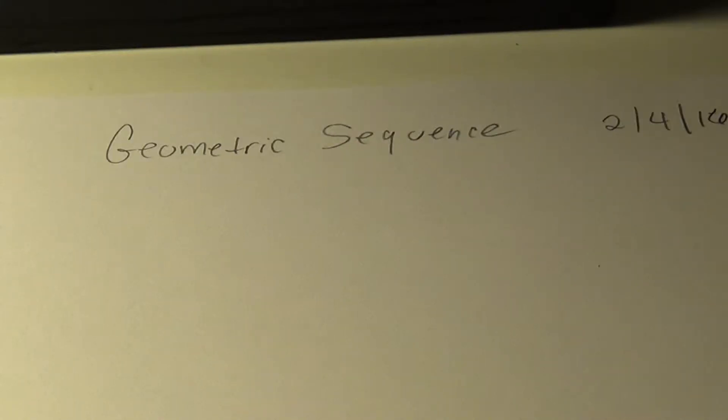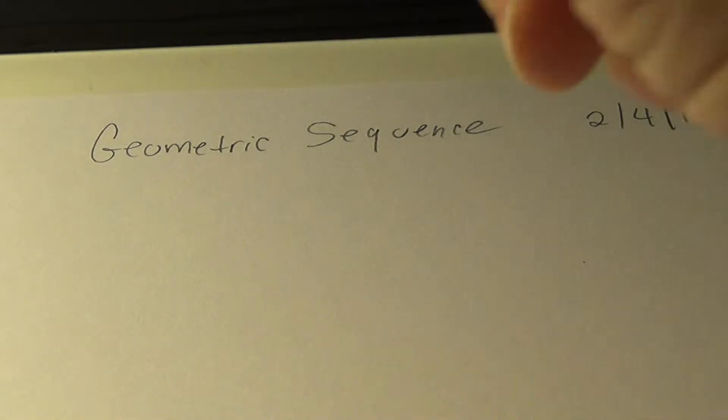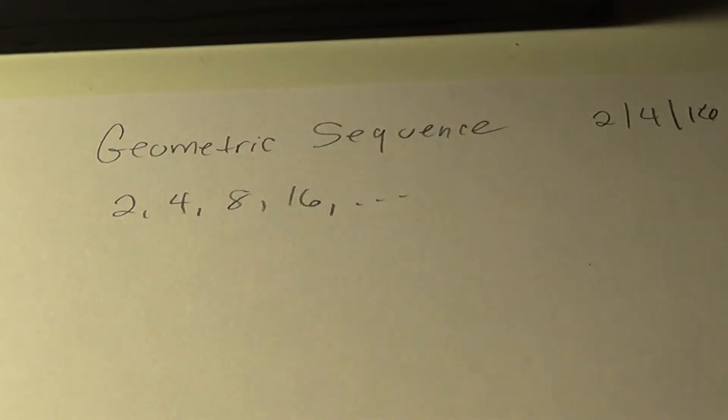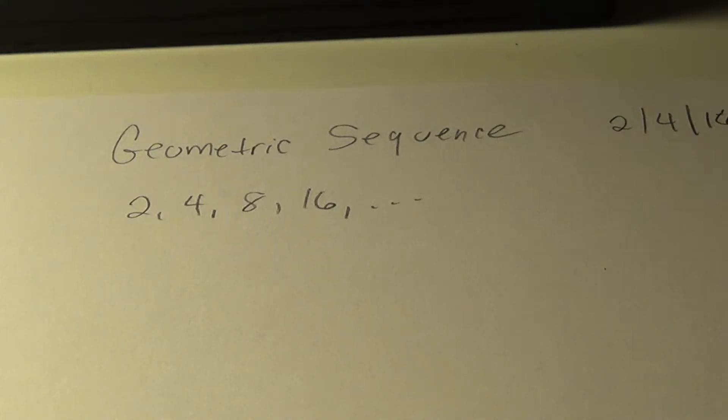So it's somewhat related to what we saw on arithmetic sequence, except these numbers are ordered by multiplying the previous number by a number to get the next number. Looking at 1, 2, 4, 8, 16. Each number is multiplied by 2 to get the following number. That is an example of a geometric sequence.